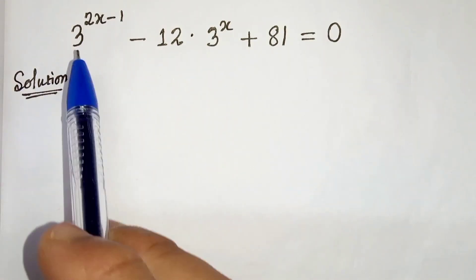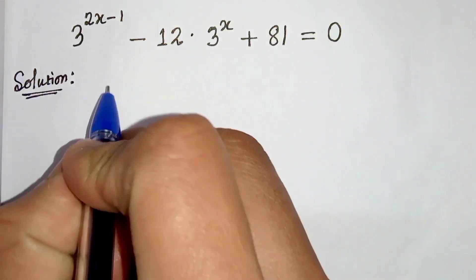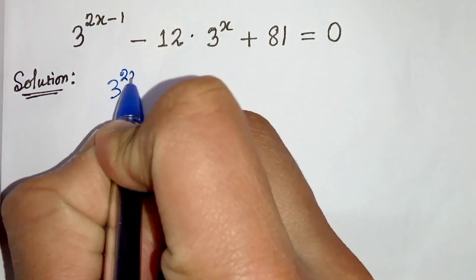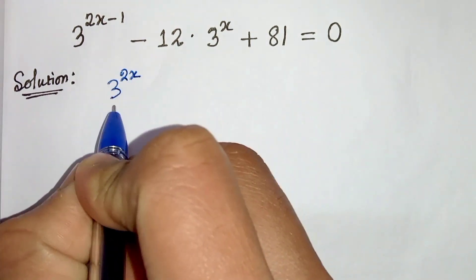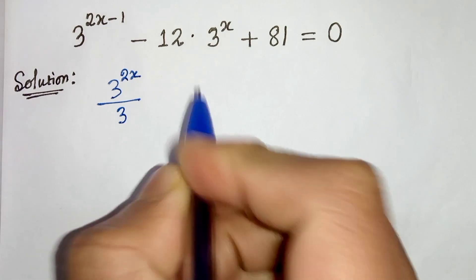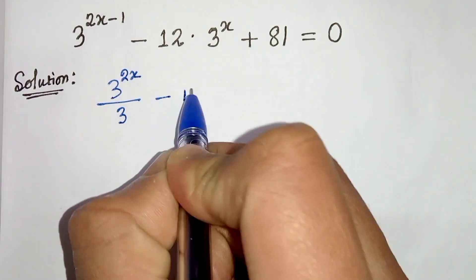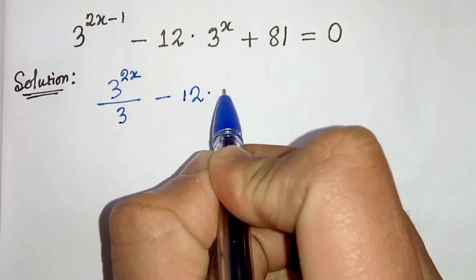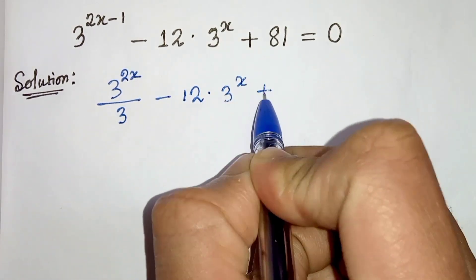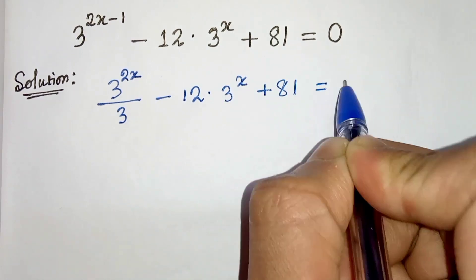We can write 3 to the power of 2x minus 1 as 3 to the power of 2x divided by 3, minus 12 times 3 to the power of x, plus 81 equals to 0.